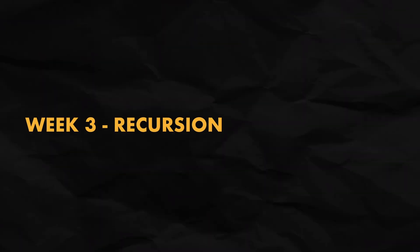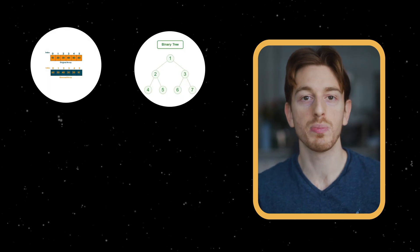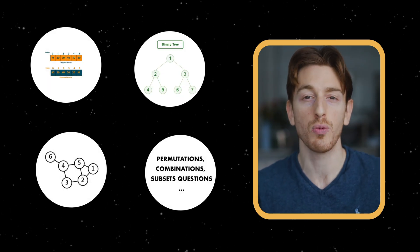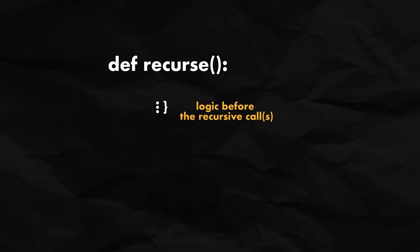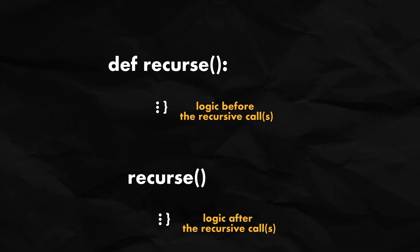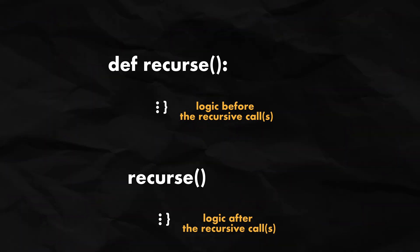Moving on to recursion and backtracking. Knowing how to work with recursion is really important — not just for array problems, but for trees, graphs, and any time you don't iterate linearly. Here's what makes any recursive question simple: you have logic before the recursive call that runs as you go deeper, the recursive call or calls themselves, and then logic after the recursive call that runs as you come back up. When you draw this out in a dry run while studying a solution, it will make a lot of sense — this is how I went from always guessing to knowing how to write recursive solutions.